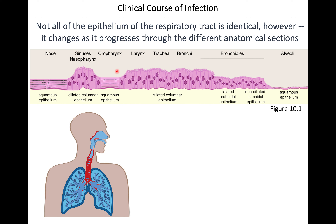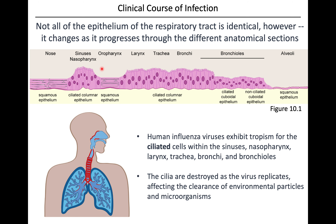Influenza virus primarily likes the ciliated epithelial cells in your respiratory tract. Your entire respiratory tract is lined with epithelial cells, but they are different types. You have squamous epithelium in your nose and oropharynx. You've got ciliated columnar epithelial cells in your sinuses and then all through your larynx, trachea, and bronchi. In the bronchioles you have some ciliated cuboidal epithelium, and deep down in the lungs at the alveoli you've got just a thin layer of squamous epithelium again.